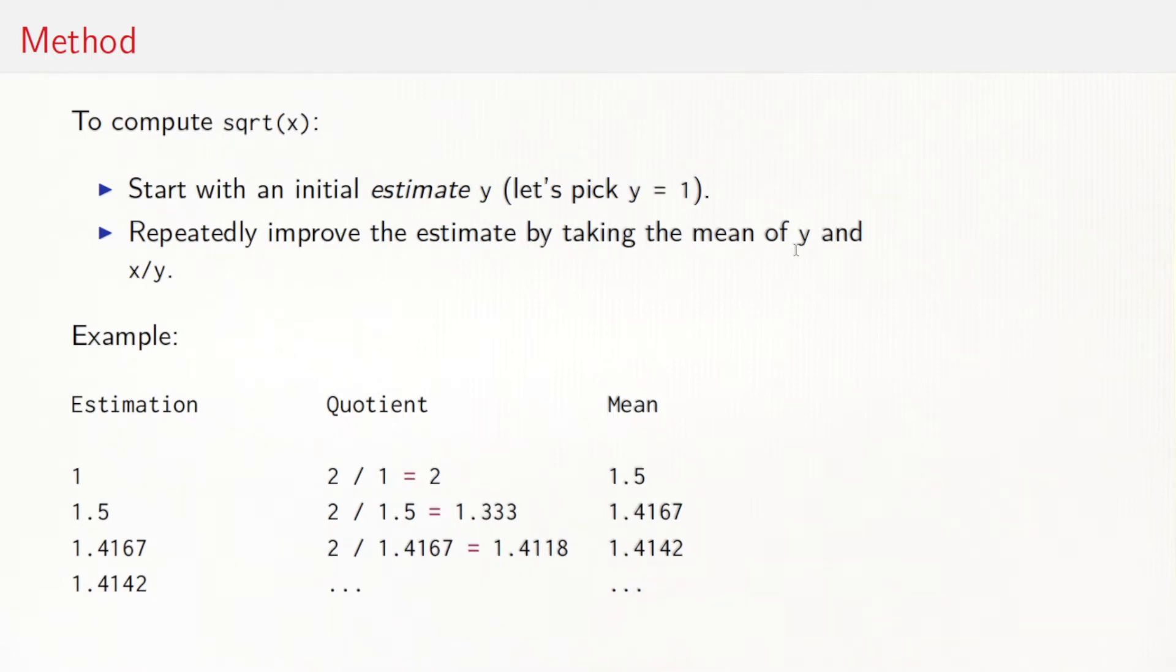Let's see that in action. The value of x in our example would be two. Our initial estimation is one, as usual, so the initial quotient is two divided by one, that's two, the mean is one point five. Now we plug in one point five to our estimation. We get a new quotient of one point three three, a new mean that you see here. And you see that it converges very quickly to the actual value of two.